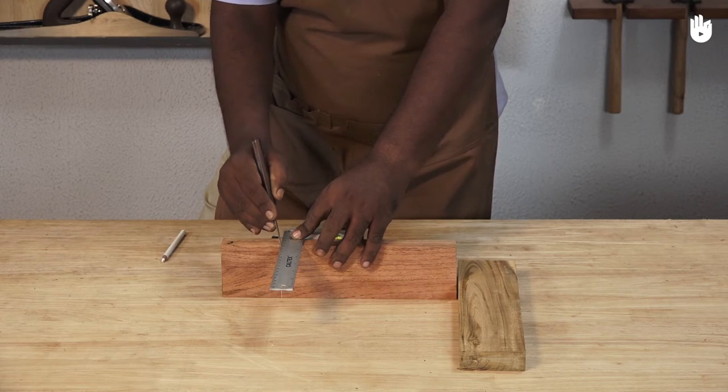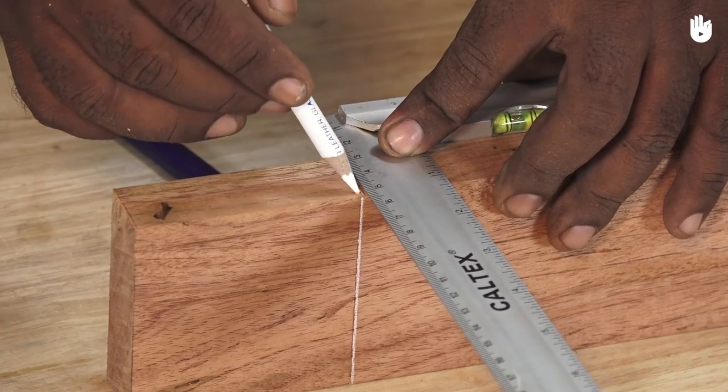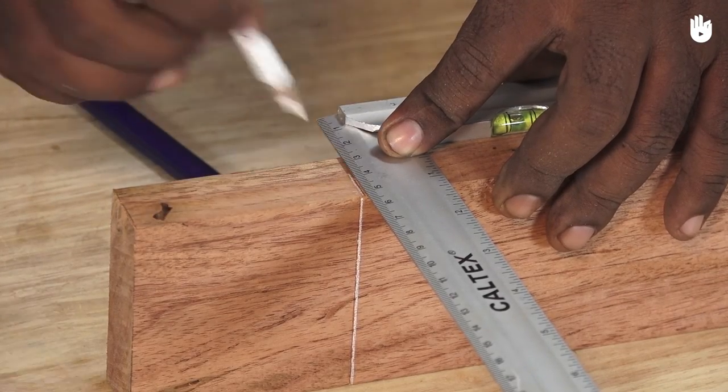Extend the lines you have just made halfway into the adjacent sides of both pieces using a tri square.